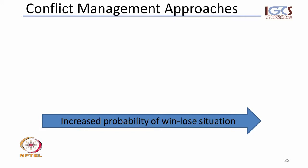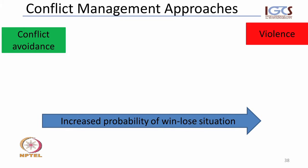As conflicts evolve from a hidden latent small conflict and grow along our conflict evolution pathway, there's an increase in probability that we will end up in a win-lose situation. The first step would be to avoid conflicts, but as they are inbuilt in our societies, we cannot always avoid them. Ignoring conflicts leads us down the same pathway, and if no steps are taken we will end up in hard or sharp violence.